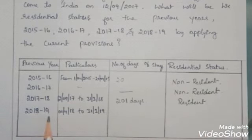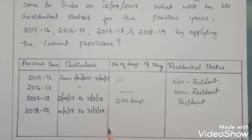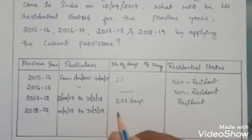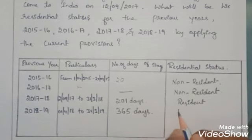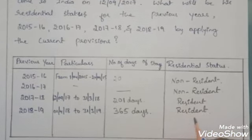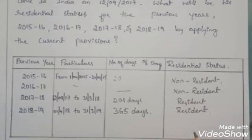In the year 2018-19, Mr. X stayed in India for the full year — 365 days — satisfying both basic and subsequent conditions, so he is treated as a Resident. That was all for today. If you found it helpful, please hit the like button and subscribe to the channel. We also cover various other subjects, so do watch them and share with your friends. Thanks for watching.